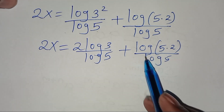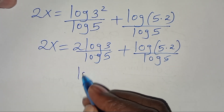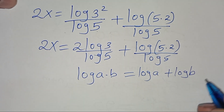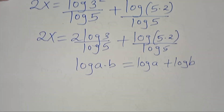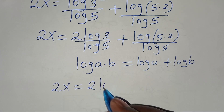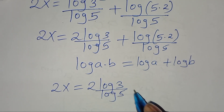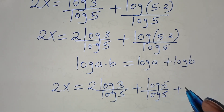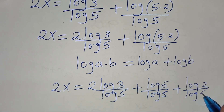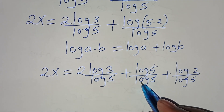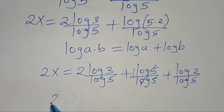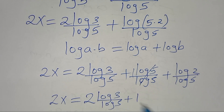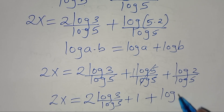The next step: log of 5 times 2 is in the form of log(a times b), which we can express as log a plus log b. Applying this logarithm property, we have 2x equal to 2 log 3 divided by log 5, plus log 5 divided by log 5, plus log 2 divided by log 5. Simplifying, log 5 divided by log 5 equals 1, so we have 2x equal to 2 log 3 divided by log 5, plus 1, plus log 2 divided by log 5.